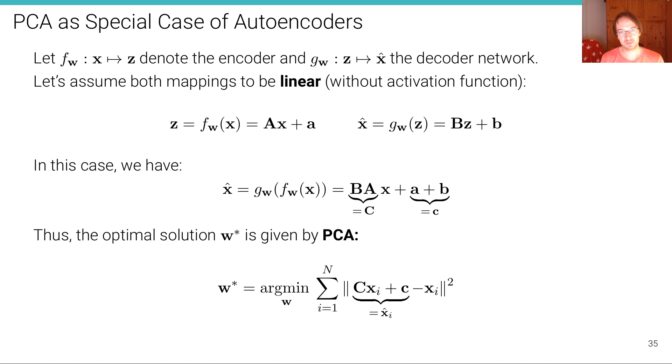Now there is a relationship between autoencoders and PCA. In particular, PCA is a special case of autoencoders, as you might have already guessed. So if we assume f_w, the mapping from x to z, the encoder, and g_w, the mapping from z to x hat, the decoder, to both be linear without any activation function.